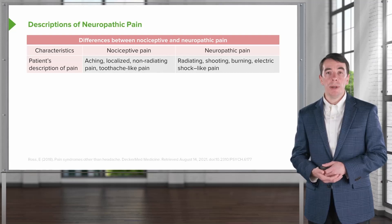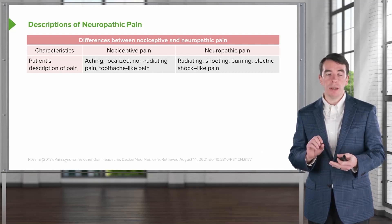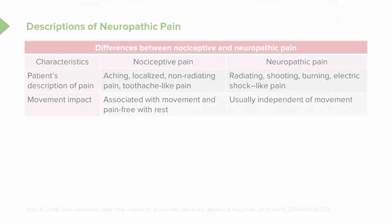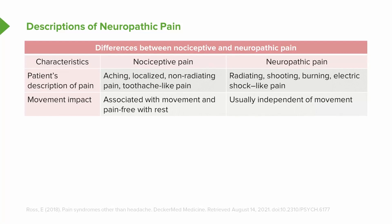In contrast, neuropathic pain is often radiating, shooting, burning, or electric shock-like pain that may start in one area and move to another. In terms of movement impact, nociceptive pain is associated with movement — movement tends to make it worse and rest may improve it. Neuropathic pain is usually independent of movement; in fact, many patients describe worsening at night when resting, when there are no external stimuli to distract the brain from feeling that neuropathic pain.